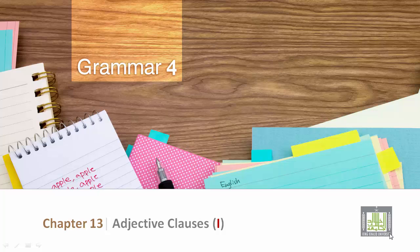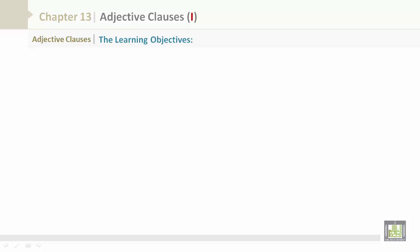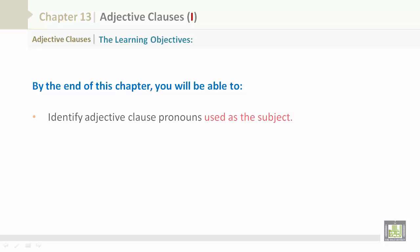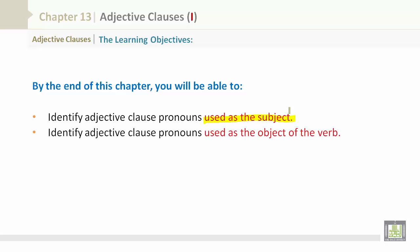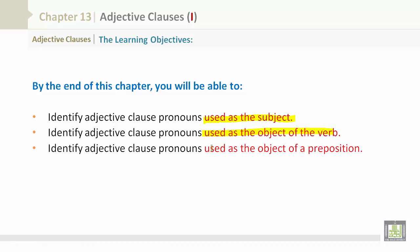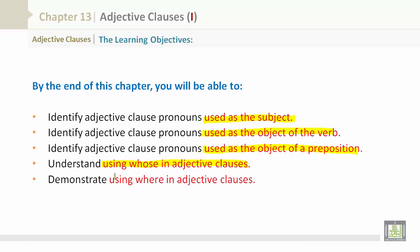Grammar 4, Chapter 13: Adjective Clauses, Part 1. The learning objectives: by the end of this chapter, you will be able to identify adjective clause pronouns used as the subject, identify adjective clause pronouns used as the object of the verb, identify adjective clause pronouns used as the object of a preposition, understand using 'whose' in adjective clauses, and demonstrate using 'where' in adjective clauses.